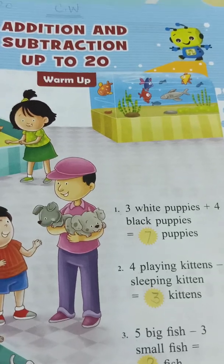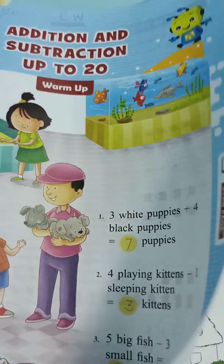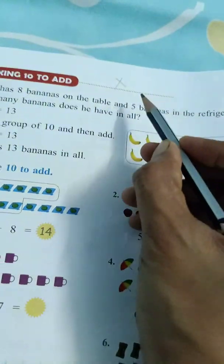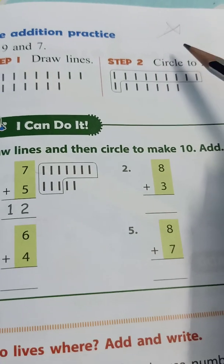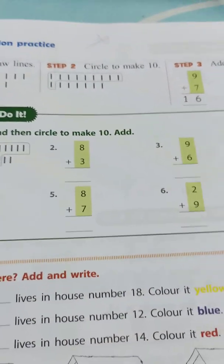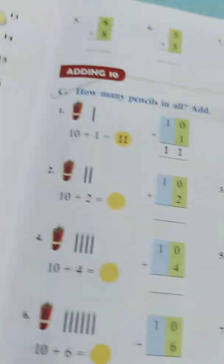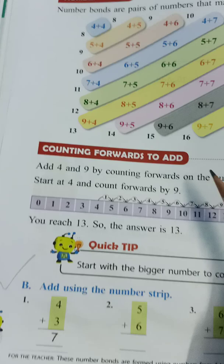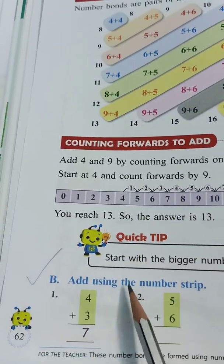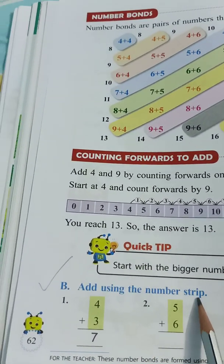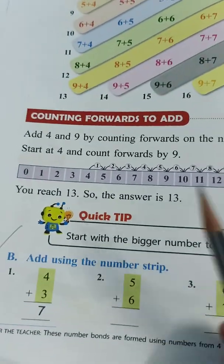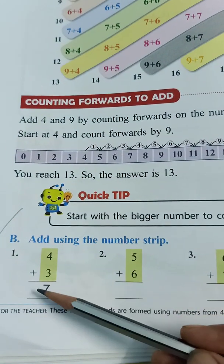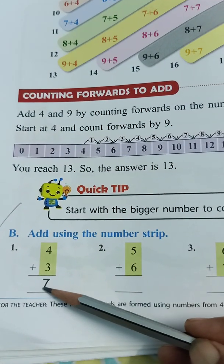Now next you have to practice page number 60 cross children, page number 61 cross. Now coming to the next page, page number 62. Look here children. B part, add using the number strip. These are the number strip children. Now 4 plus 3, 1 is already done for you, 4 plus 3 is 7.